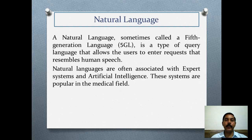A natural language, sometimes called a fifth generation language or 5GL, is a type of query language that allows users to enter requests that resemble human speech. Natural languages are often associated with expert systems and artificial intelligence. These systems are popular in the medical field.